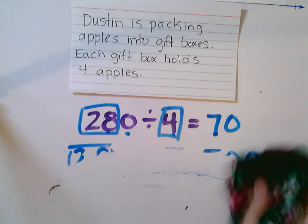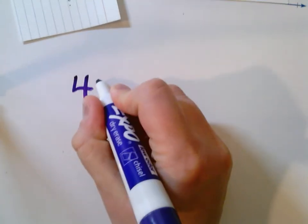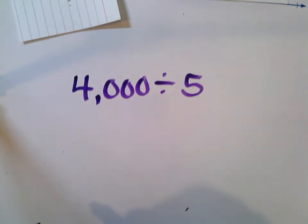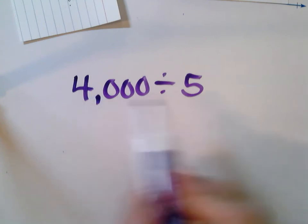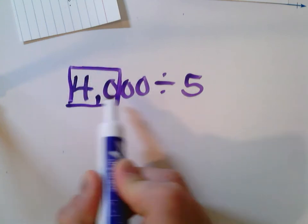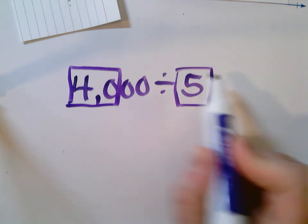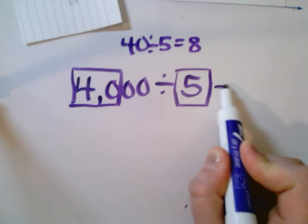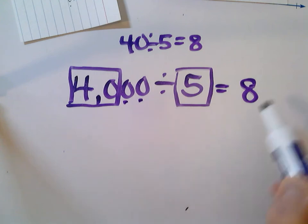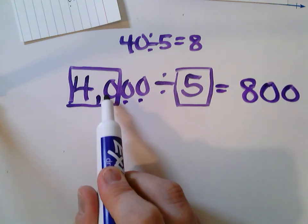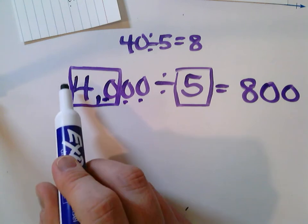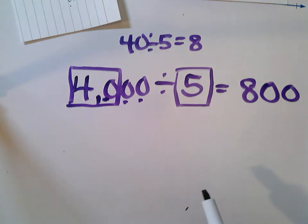Let's try a few problems that don't have to do with Dustin and his apples. What if I had 4,000 divided by five? Well, four is not divisible by five, but if I go one more place value over, I know that 40 is divisible by five. 40 divided by five is eight. So here, 40 divided by five equals eight, and I'm going to have two zeros to put at the end of my quotient. I'm not going to include the zero that's part of my 40 — I'm going to put the zeros on the outside of my box. That's why it's good to put the box around so we don't put too many zeros in our answer.